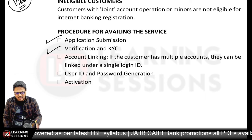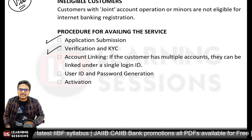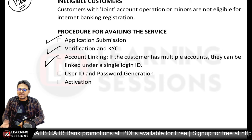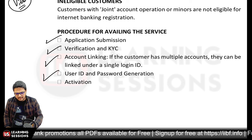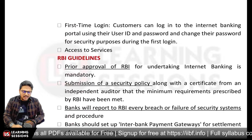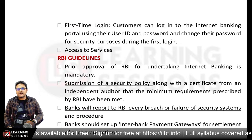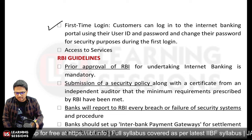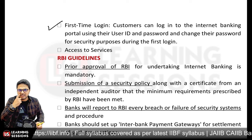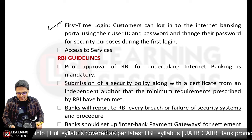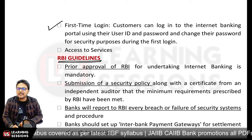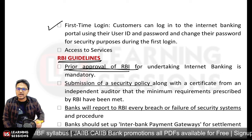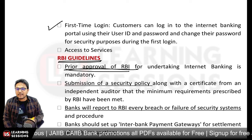Procedure for availing internet banking: Submit an application to the bank, the bank verifies KYC. If you have multiple accounts, link one account to a single login ID. You receive a User ID and password, then activate internet banking. On first login, you enter the ID and system-generated password, change it, and gain access to services. Per RBI guidelines, prior approval from RBI is required before launching internet banking services.